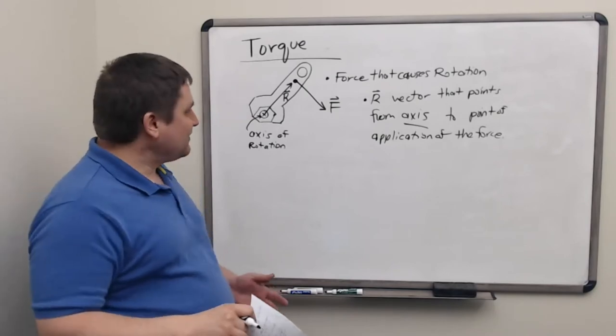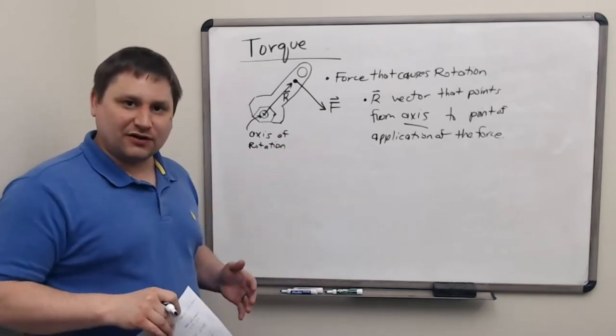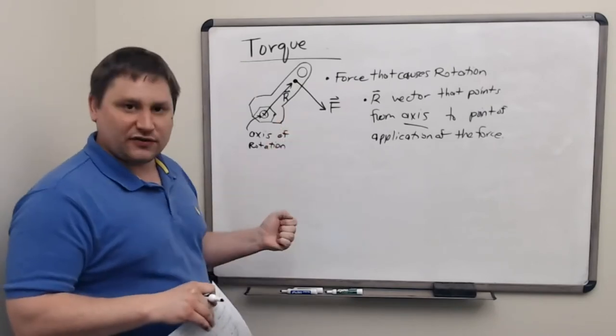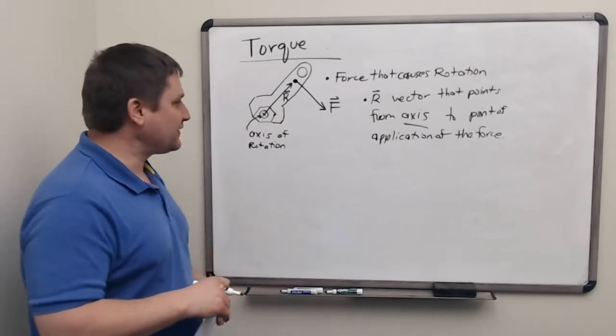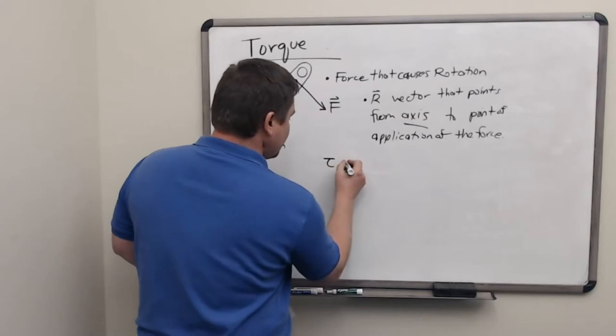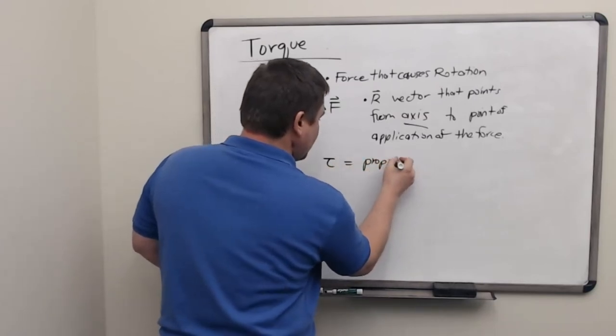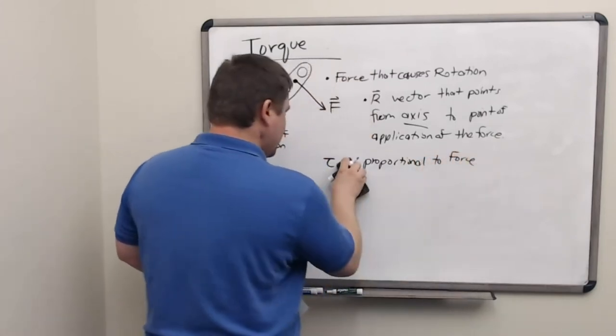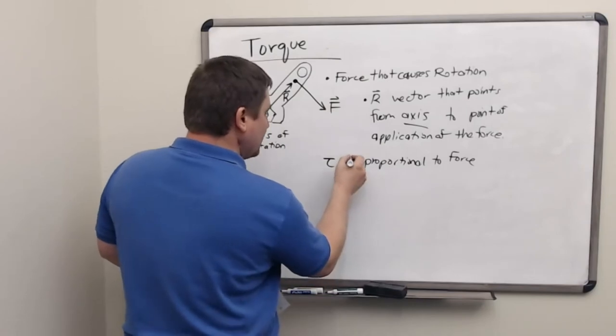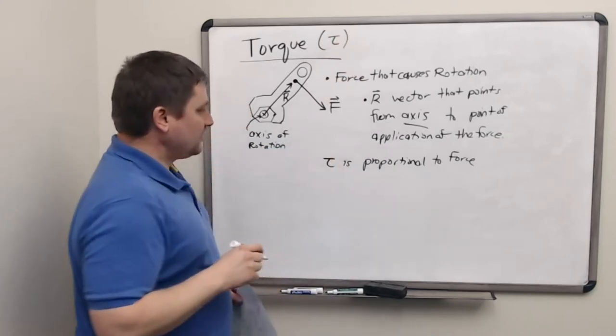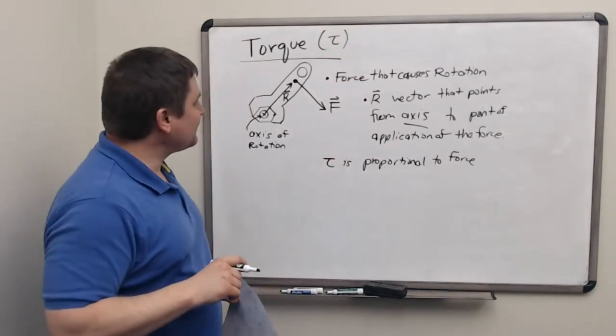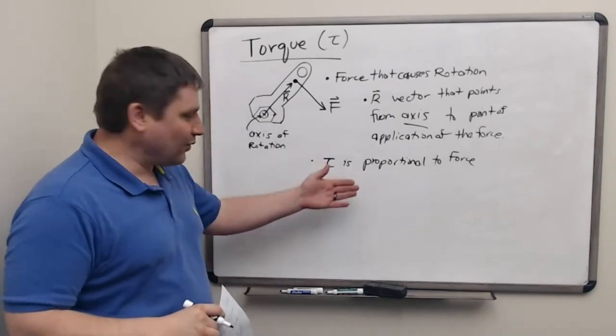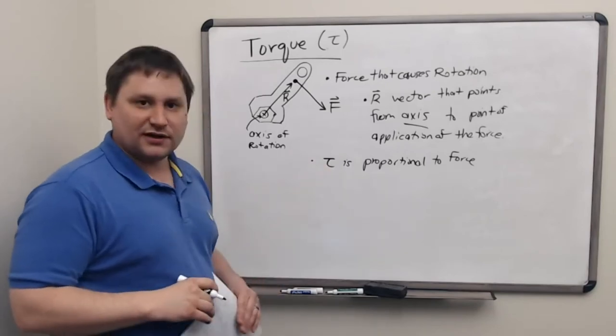So clearly, if we have a larger force, we're going to be able to cause a larger tendency to rotate. So our formula for torque should increase the torque value with a larger force. Let us introduce the symbol tau, lowercase greek letter tau, to represent the variable for torque in a situation. One of our intuitions is that the torque produced by a force should be proportional to that force.